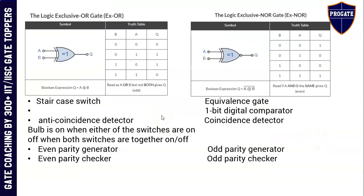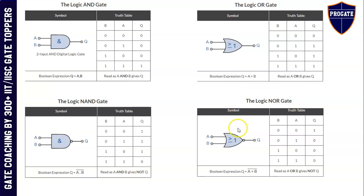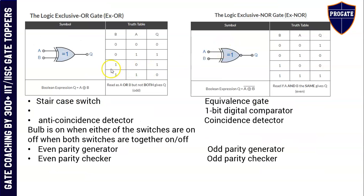Exclusive OR gate — A exclusive OR B. This is the symbol. The difference between the symbols of OR gate and XOR is: in the OR gate, only one curve is present at the input side, whereas in the XOR gate, two lines are drawn at the input side of the curve. If we see the truth table, whenever the inputs are the same, then the output is zero.